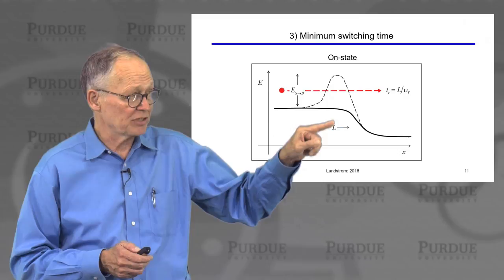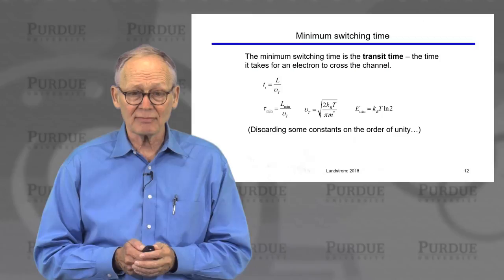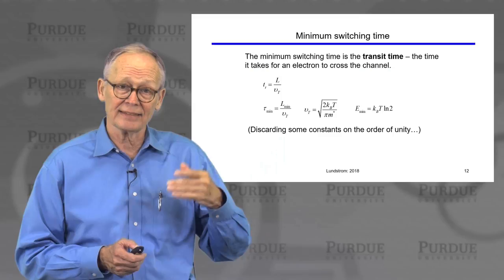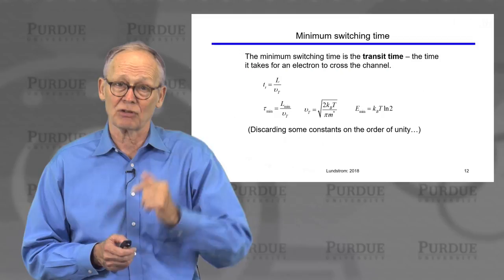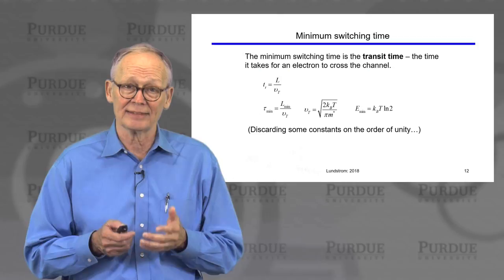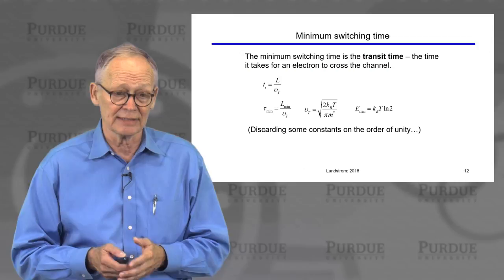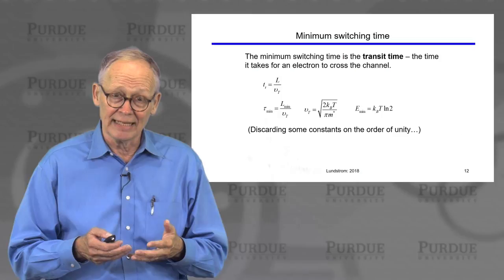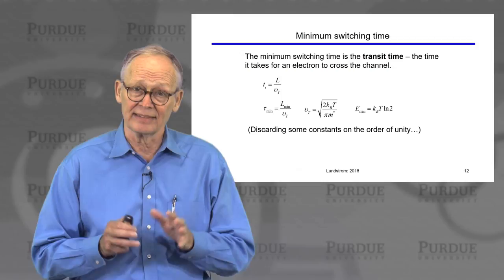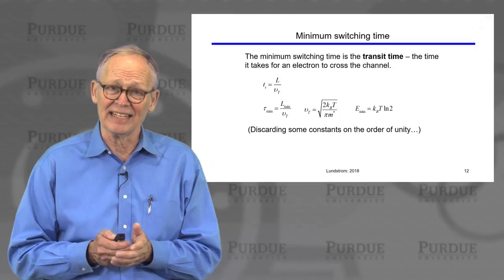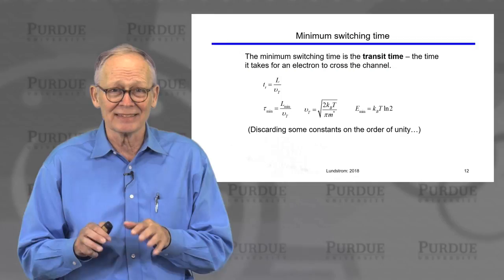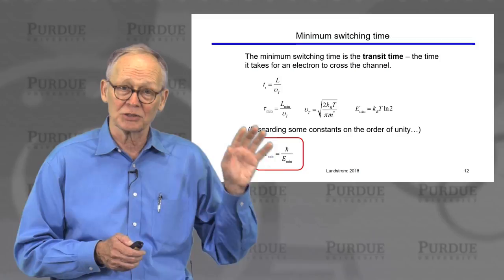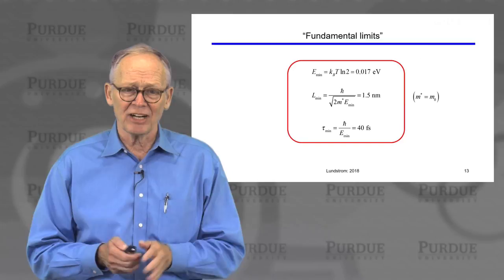The third limit: what is the minimum switching time? We push the energy barrier down, and the electron goes across the channel at a certain velocity — it had a thermal velocity in the source, gets injected into the channel, and comes out the other end. The time it takes to go across the channel is the transit time: the length of the channel divided by the velocity of the electrons. The minimum transit time is the minimum channel length divided by the injection velocity. In the non-degenerate case, the injection velocity is the unidirectional thermal velocity. The minimum energy is related to kT, so we can relate that to the minimum switching energy, and we end up with a simple expression: h-bar over the minimum switching energy.